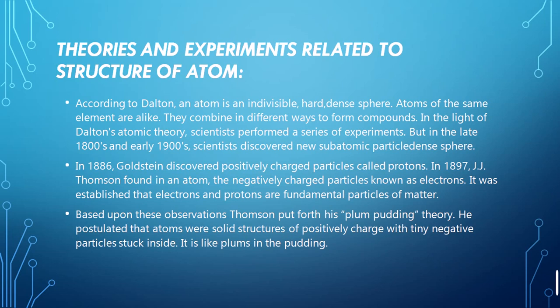In 1886, Goldstein discovered the positively charged particle called the proton. In 1897, J.J. Thomson found the negatively charged particle called the electron. It was established that electrons and protons were fundamental particles, but there was another entity that was neutral, called the neutron, and this was discovered by James Chadwick in 1932.